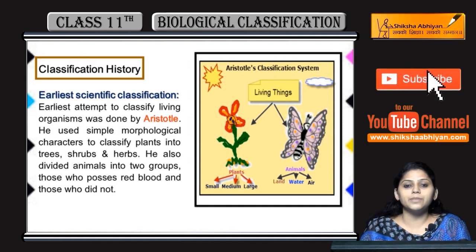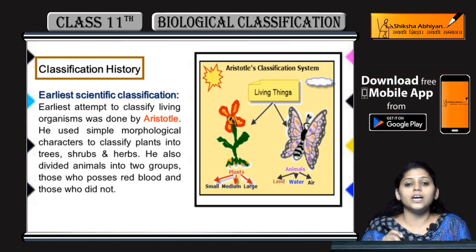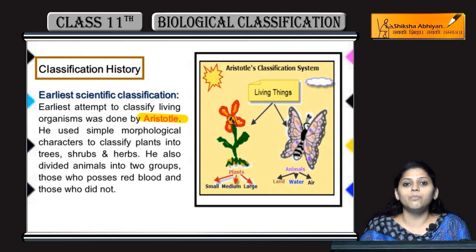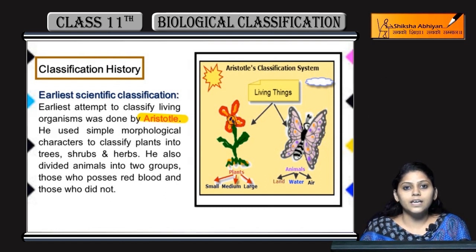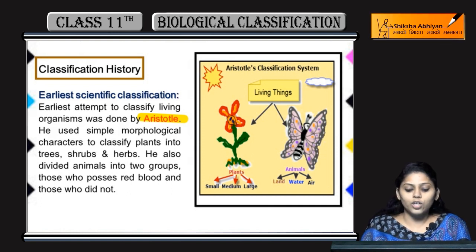Sab se pehle kisne attempt kiya classification karne ke liye living organisms ki? Sab se pehle classification ka attempt kiya Aristotle, the father of biology, ne. Unhone living organisms ko classify kiya into plants and animals.